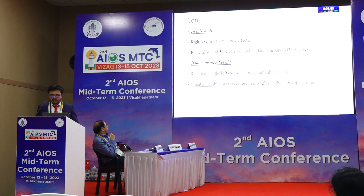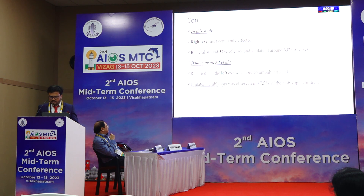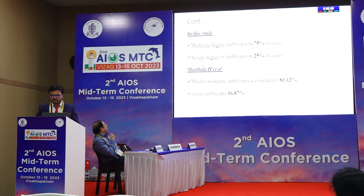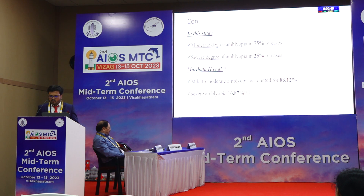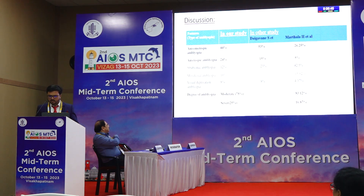In another reference, unilateral amblyopia was observed in 87.5% of children. In our study, moderate degree amblyopia accounted for 75% of cases and severe degree 25%. Martha H. Atal's study showed mild to moderate amblyopia in 83.12% of cases and severe amblyopia in 16.87% of cases.